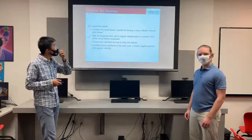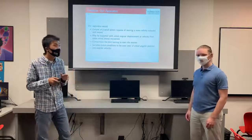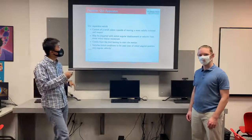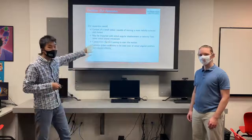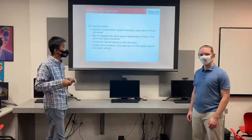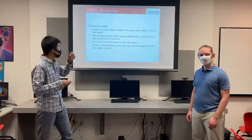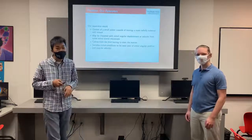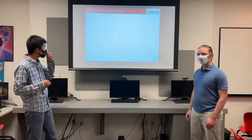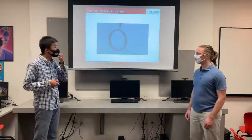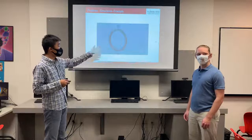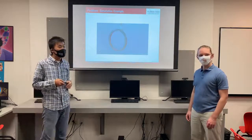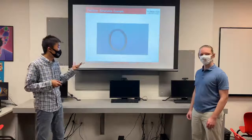Our apparatus consists of a small piston capable of moving the mass radially outward or inward, and may be imparted with an initial angular displacement or velocity from some initial lateral movement. This would be from the bird leaning at the start of the motion, and it satisfies the initial conditions of initial angular position and angular velocity. We have a numerical simulation that shows the motion of the bird, which will be used later in the final case where we have air resistance, friction, and gravity.